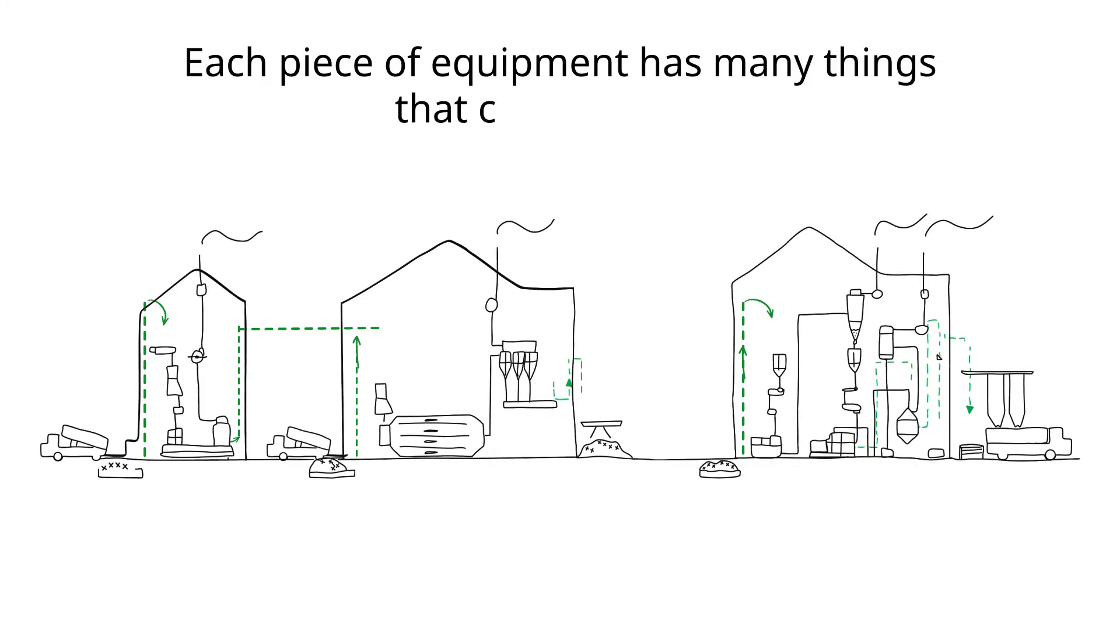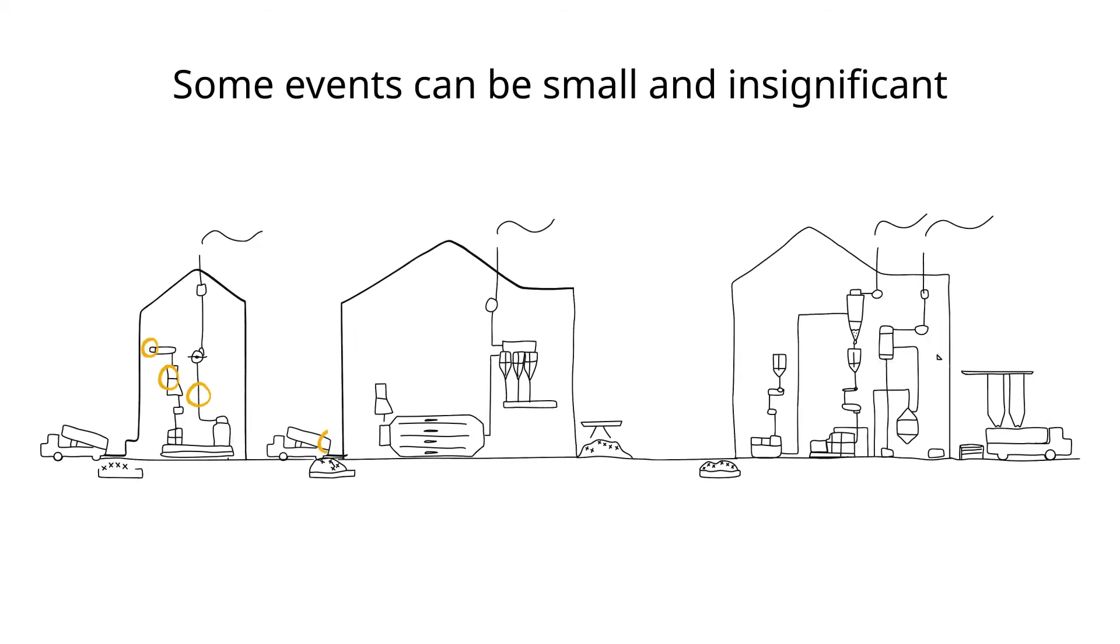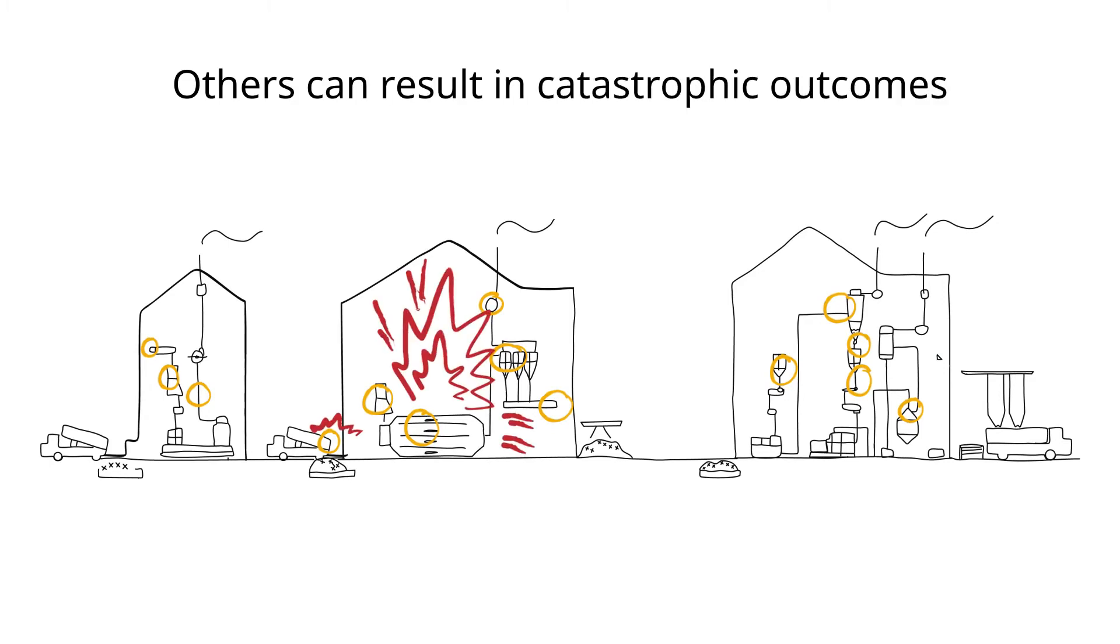Each piece of equipment that we operate has many things that can go wrong. Some events can be small and almost insignificant, while others can result in catastrophic outcomes.